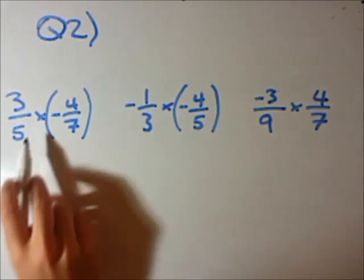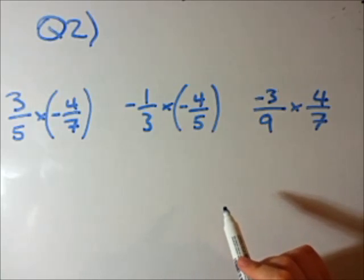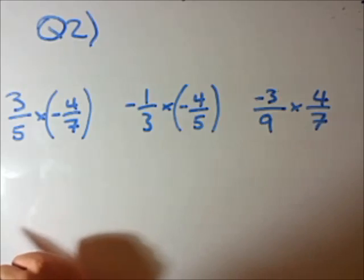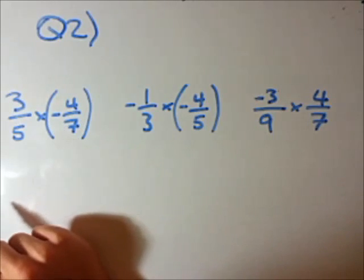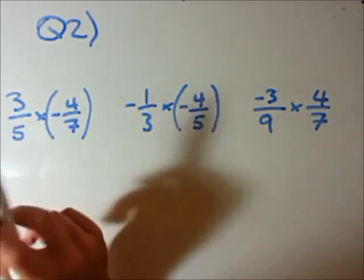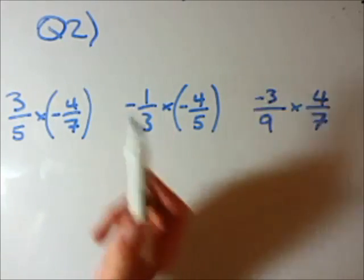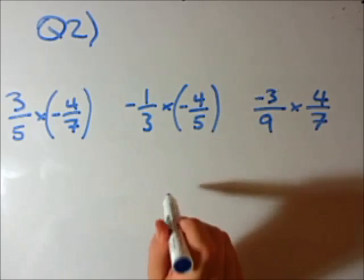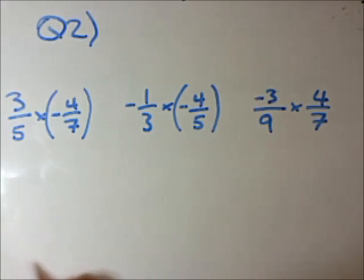Question 2. We are going to multiply some fractions, just like in the multiplication of a fraction video, but now we have some negative numbers. Using the same rules for multiplying with negative numbers in integers: positive times positive is positive; if one of them is negative, the answer is negative; and if they're both negative, two negatives multiply to be a positive.